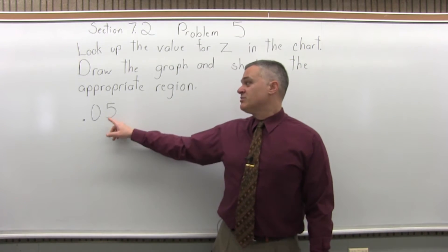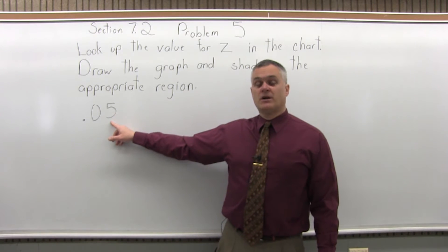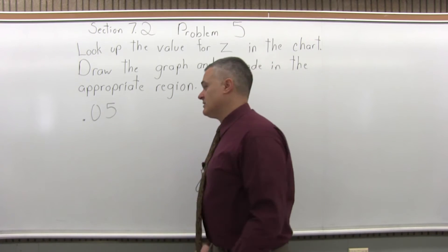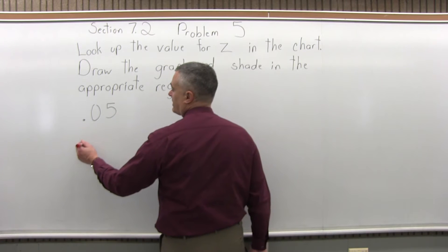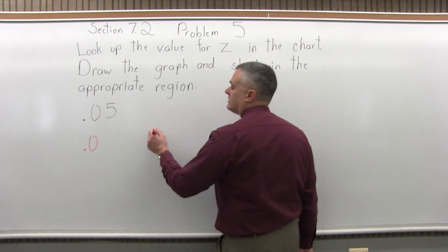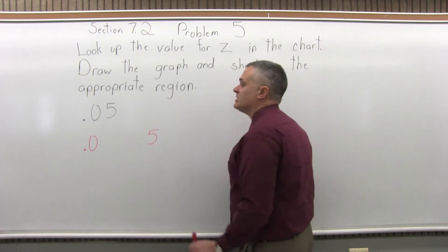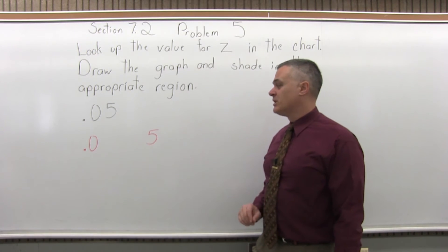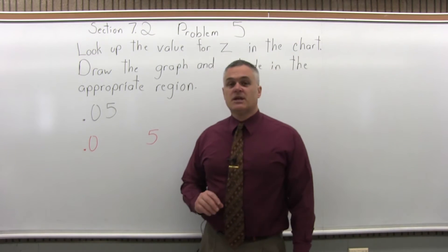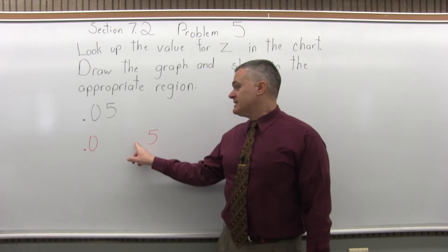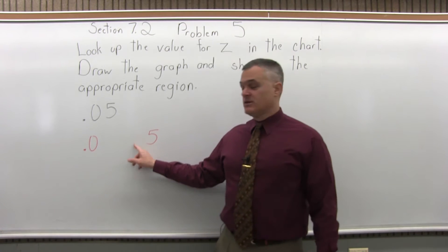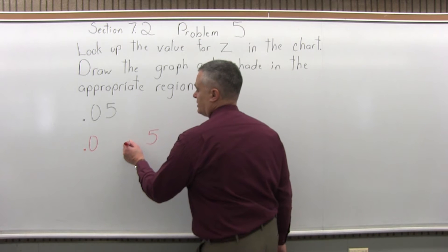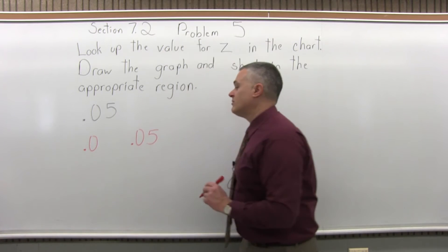Step two is split the number into two parts by pulling off the right most digit. So we will split this one by writing it as .0 and 5. So the right most digit, the 5, we have pulled off and we have split the number to look up into two parts. Step three, put a .0 in front of the right most digit that you pulled off. So that 5 becomes a .05.